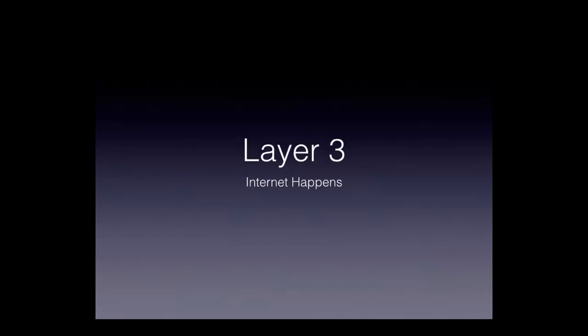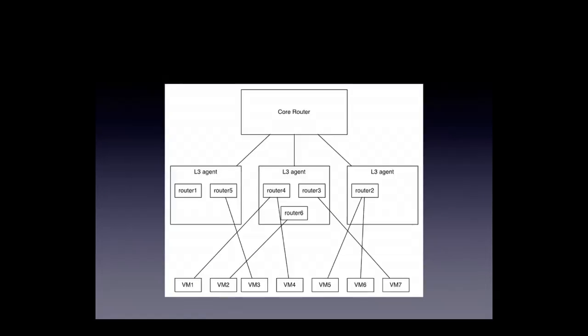Starting at layer three — this is where internet happens, and that's sometimes a good thing, sometimes not. In a typical setup, you might have multiple L3 agents running, and all of them host different routers. When you have an L3 agent fail, you have these routers that are left over and they've got nowhere to go. So what do you end up doing with these things?